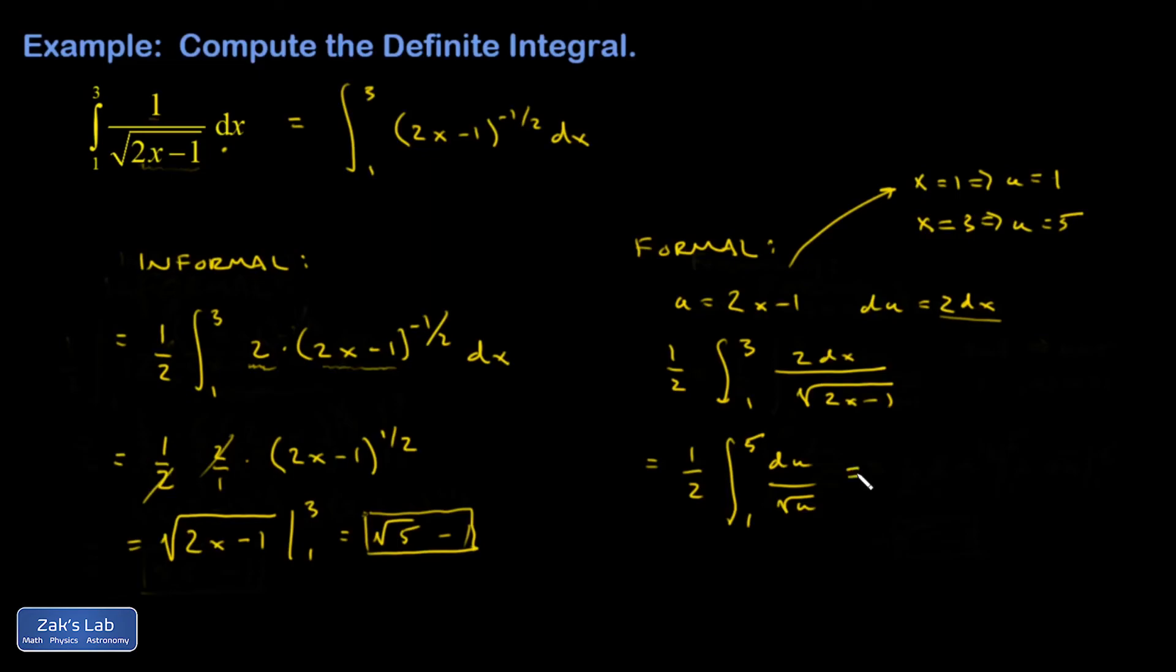Now, I can do the u integral. This is a u to the negative 1 half. I guess I'll write that. And then I use the power rule. I add 1 to the exponent and divide by the result. So, I have 1 half. And I have a u to the 1 half divided by 1 half, which is the same as multiplying by 2 over 1.